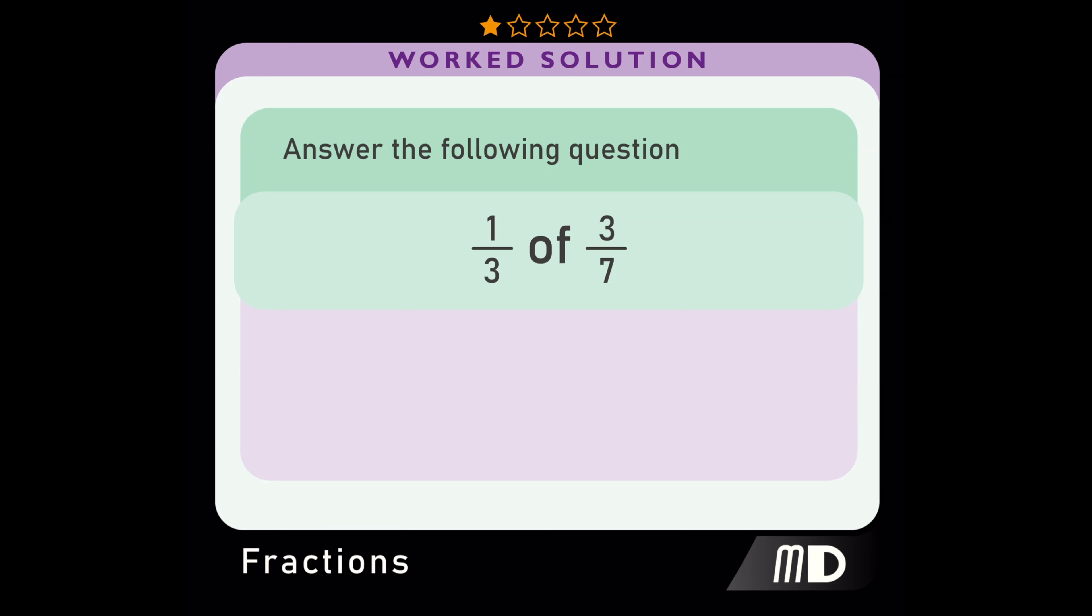That means multiplying together the numerators, that's the top number of each fraction, to get the numerator of our answer.